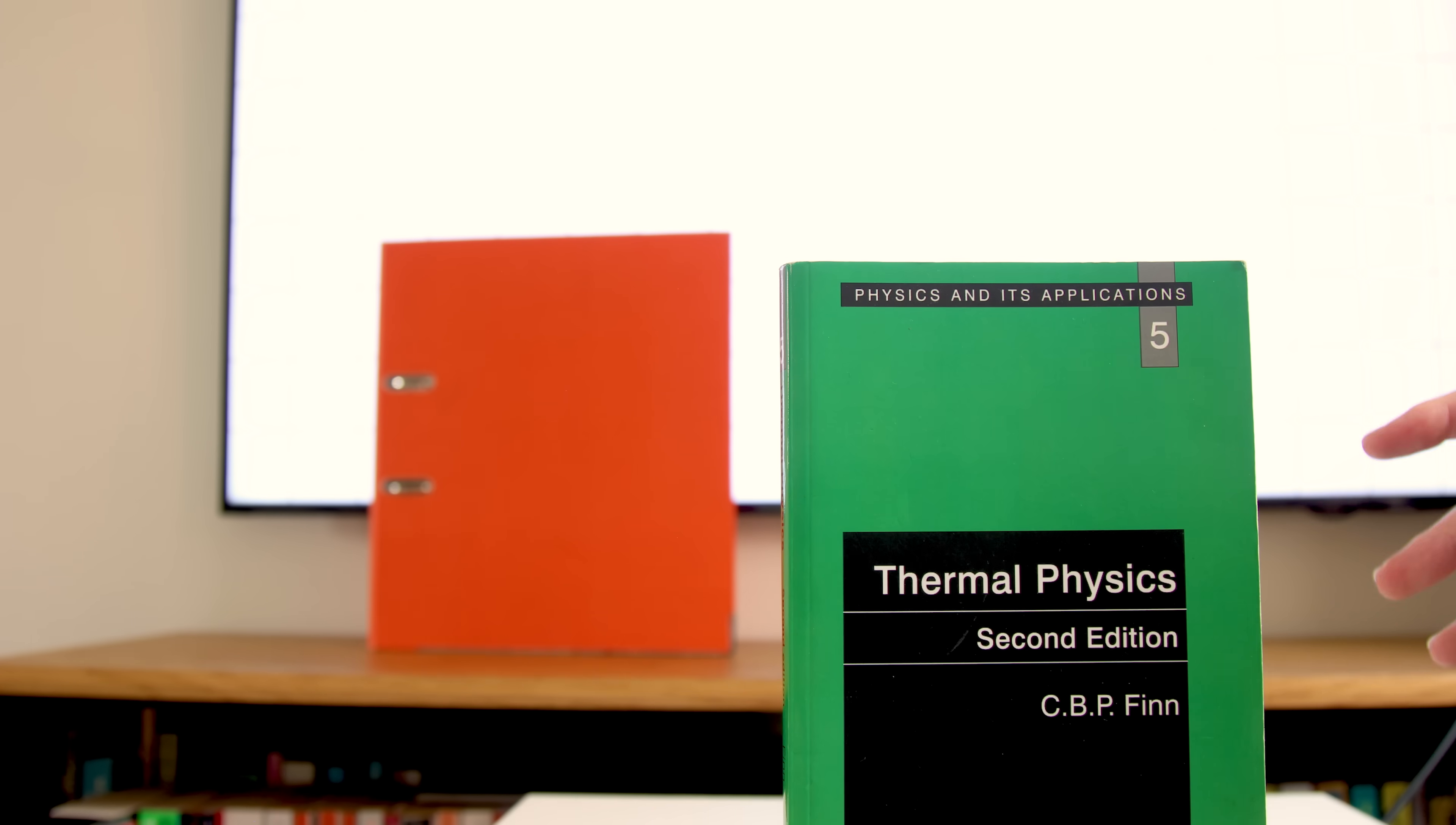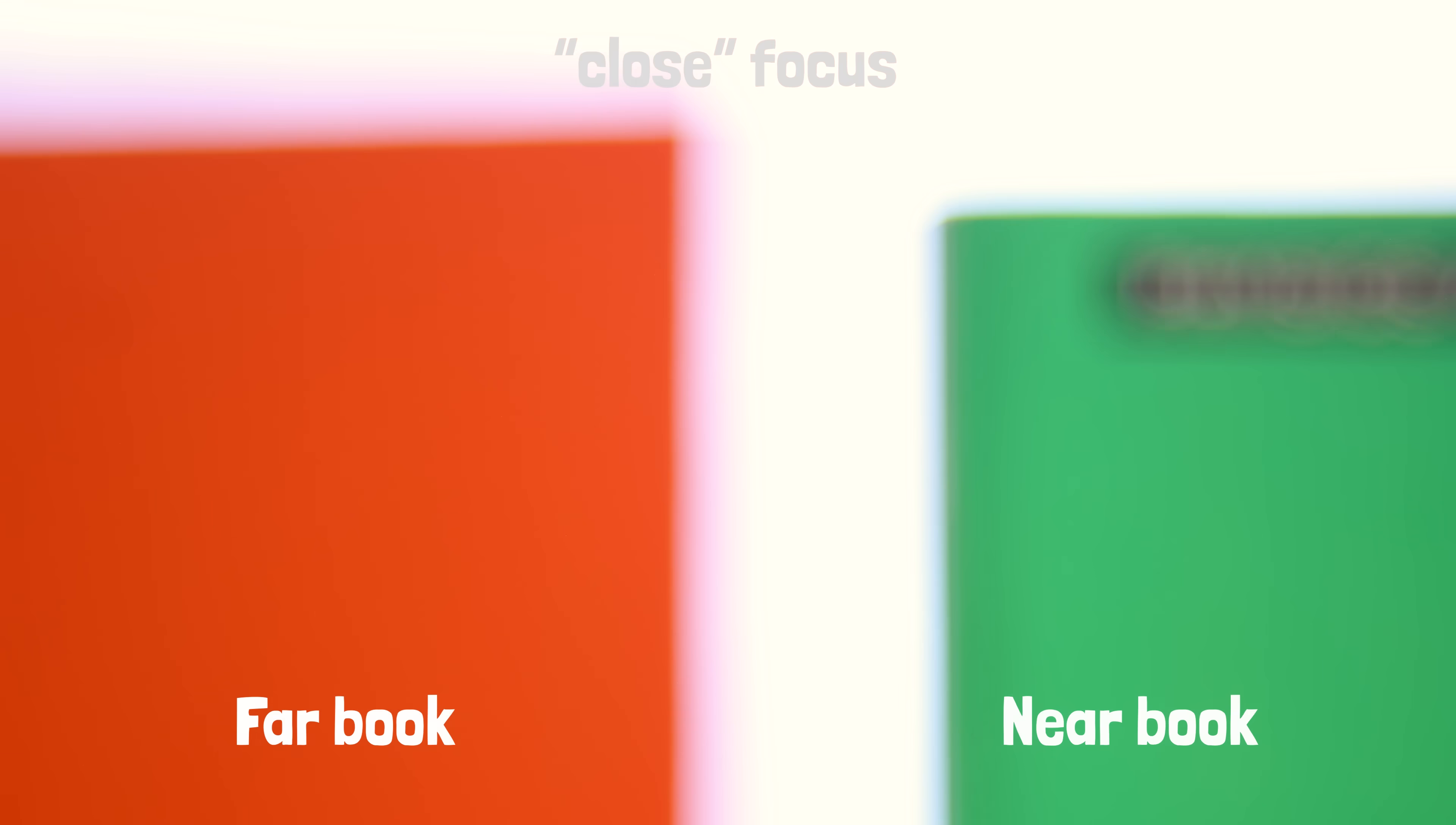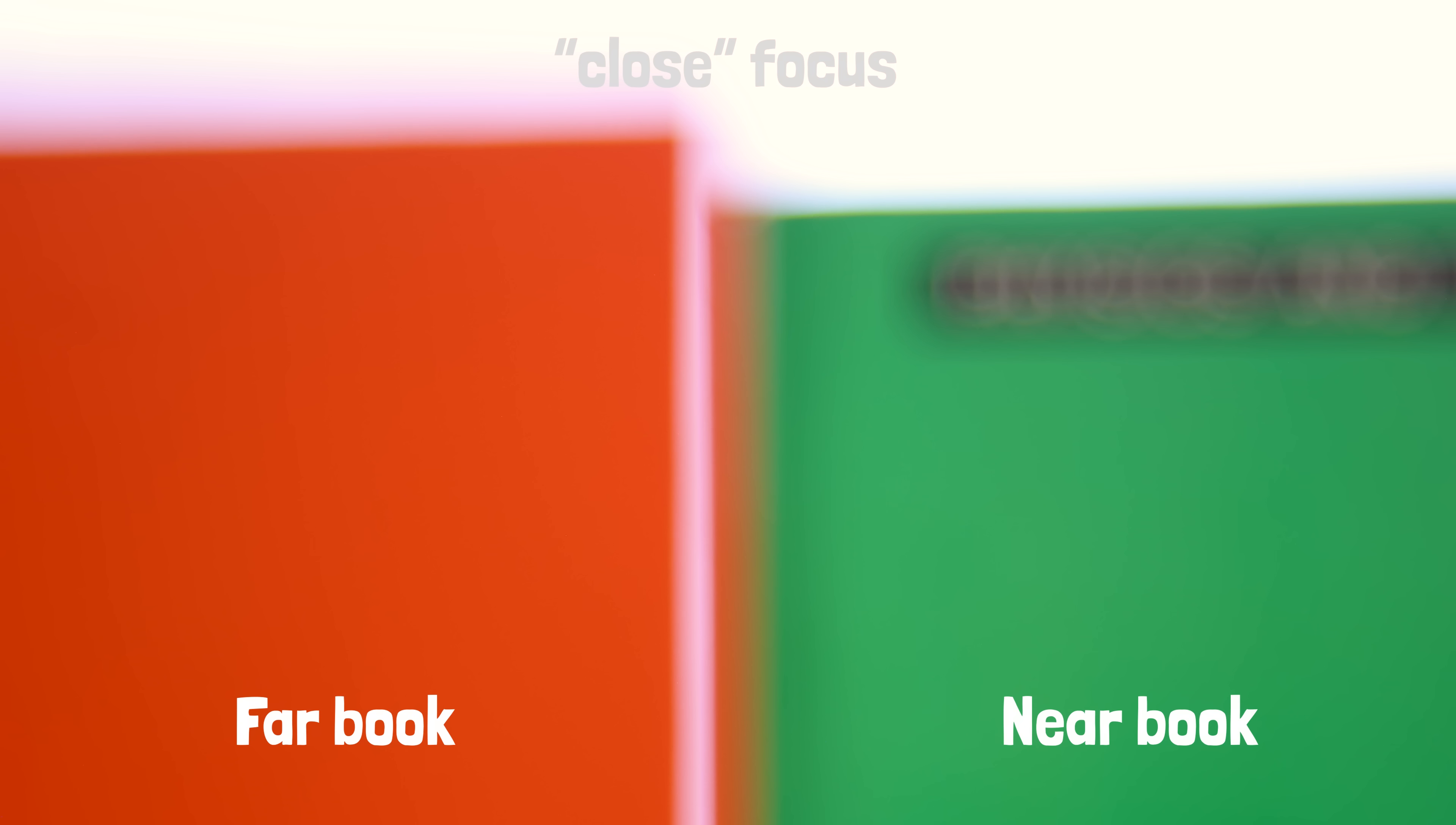Another demo with colored textbooks reveals the explanation. Even though the nearer green textbook appears to blister outwards, the blister has the orange color of the more distant textbook. It's a somewhat bizarre mirage-like vision of the more distant textbook that's revealed by the shrinking bokeh between the books.